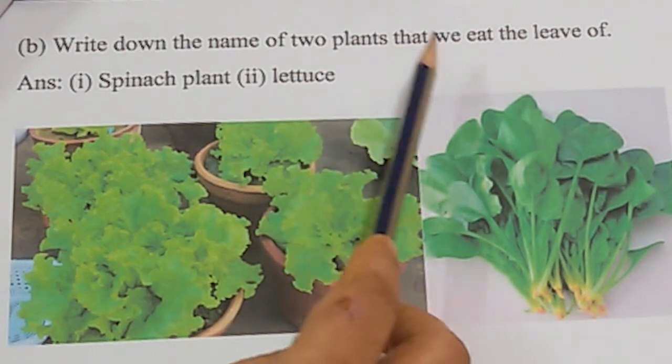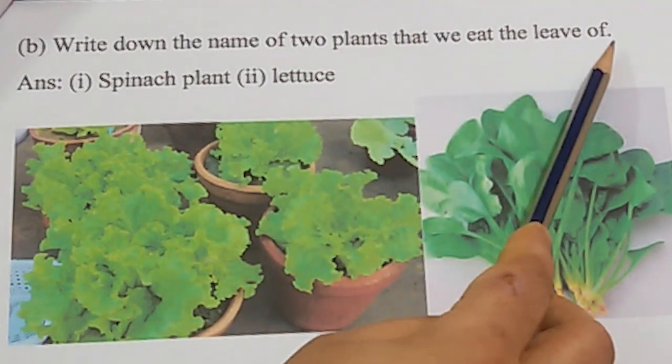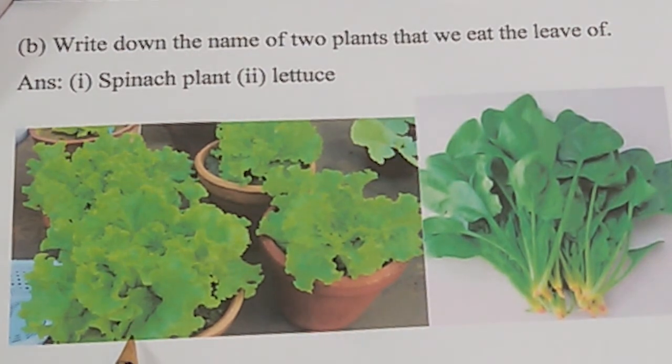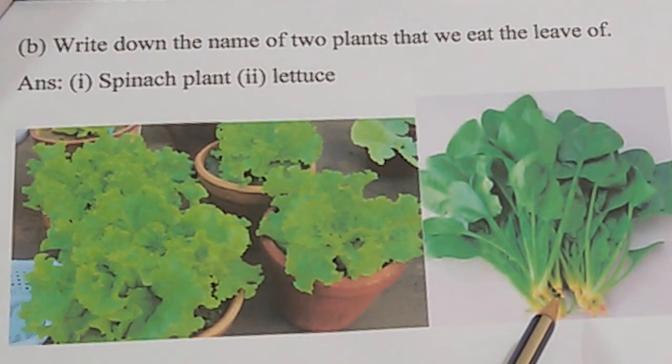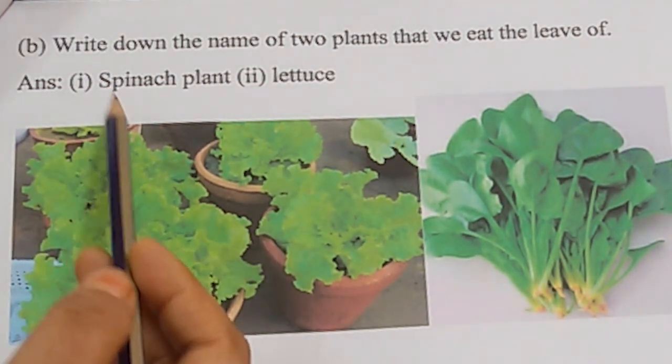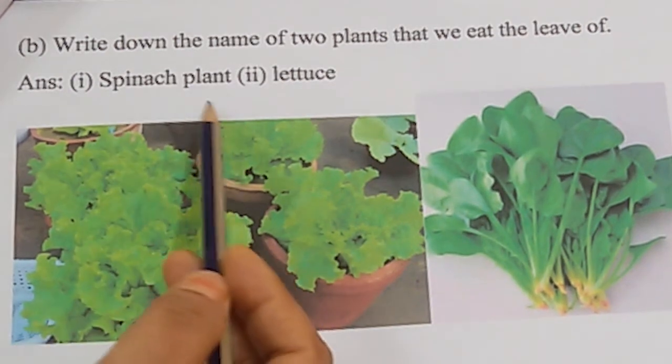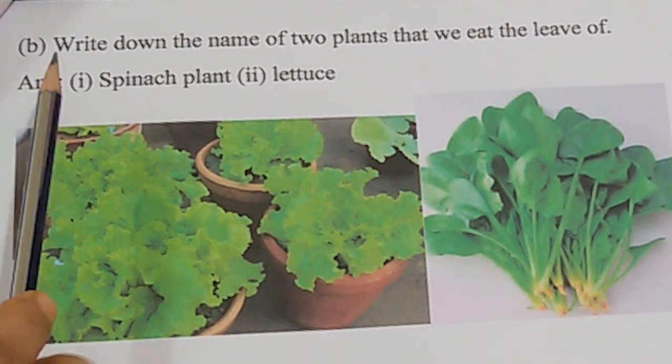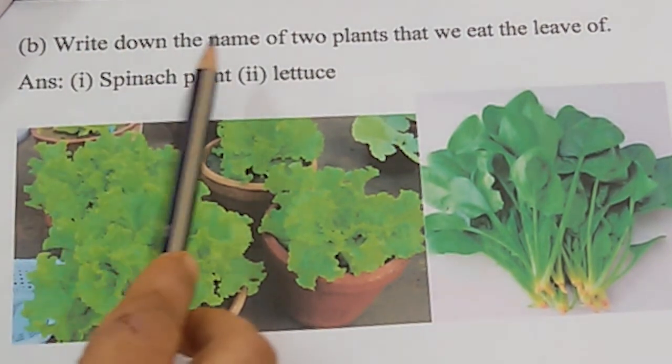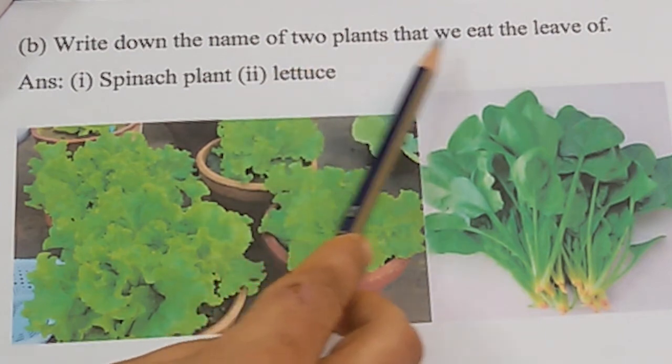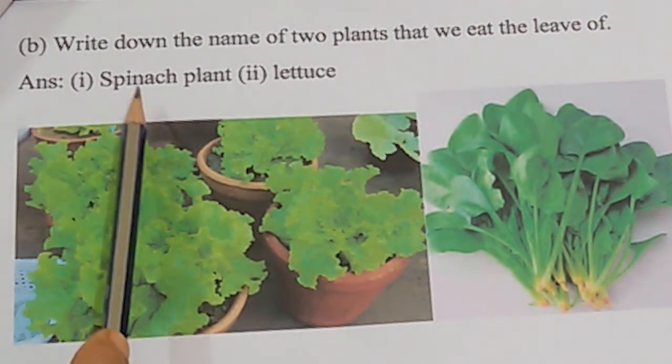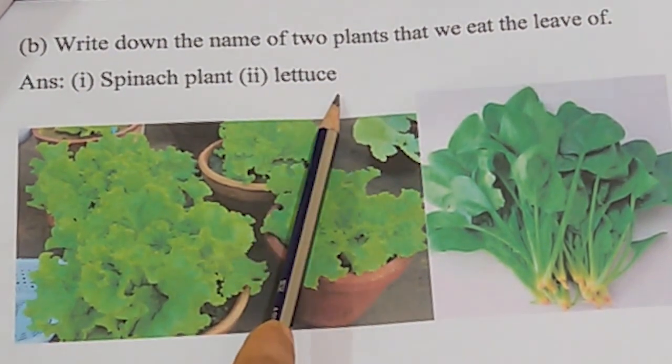Next question: write down the name of two plants that we eat the leaves of. Here are two pictures. One picture is lettuce, number two is spinach. So our answer is: one, spinach plant; two, lettuce.